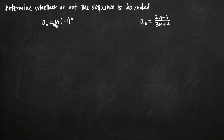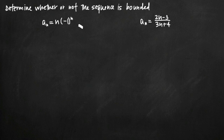The first problem is the sequence a sub n equals n times the quantity negative 1 raised to the n power. When it comes to determining whether or not a sequence is bounded, the first thing we need to determine is whether or not the sequence is monotonic — more specifically, whether over time the sequence is always increasing or always decreasing. If it never can be called increasing or decreasing, then the sequence is not monotonic.